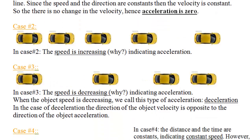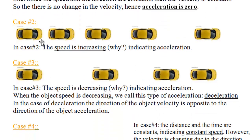In Case 2, again taking a picture every second, you can see the distance is increasing from one image to the next, which means the car is speeding up. Since speed is distance over time, and the time is constant but the distance is increasing, this indicates that the car is speeding up. This is acceleration — the car in Case 2 is accelerating.